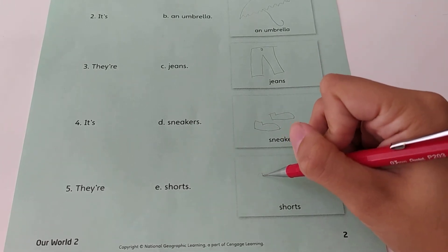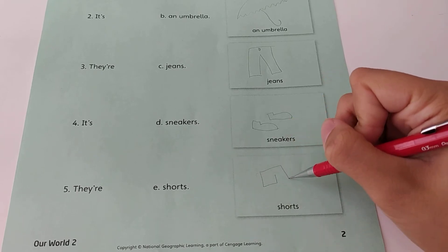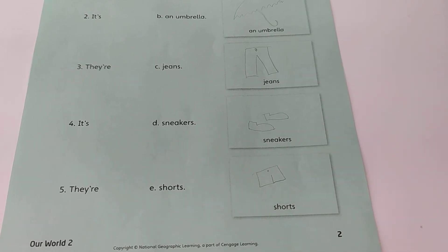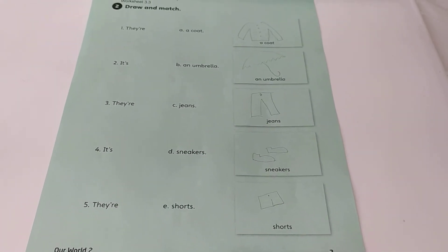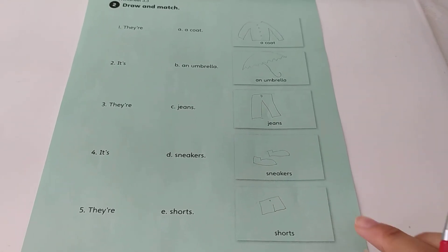And you are gonna do shorts. Shorts are like tiny jeans. Shorts. So I did all my drawings. A coat, an umbrella, jeans, sneakers, and shorts.